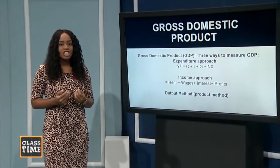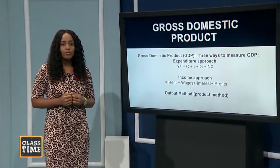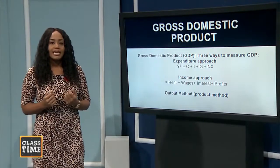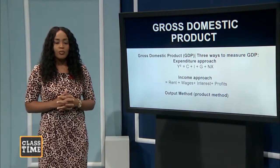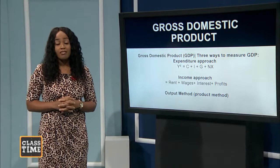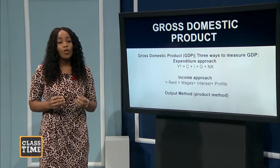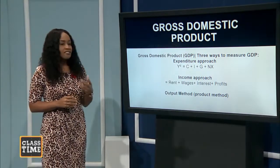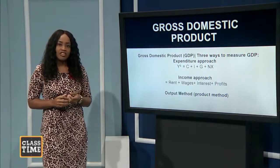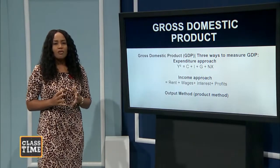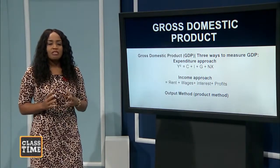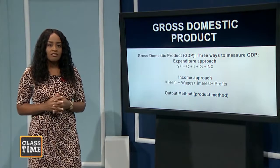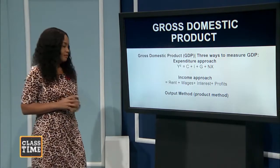The other ways of deriving GDP include the income method and the output method. When looking at the income method, we look at payments made to the owners of the factors of production — this includes wages, salaries, interest, and profits. When looking at the output method, you're simply looking at a summation of the value of final goods produced for the market.